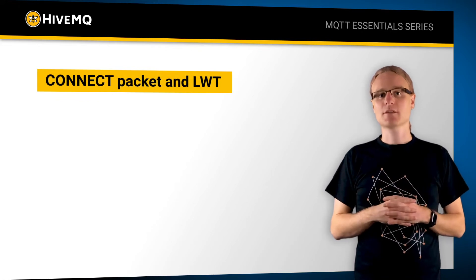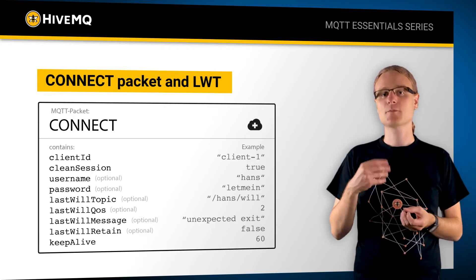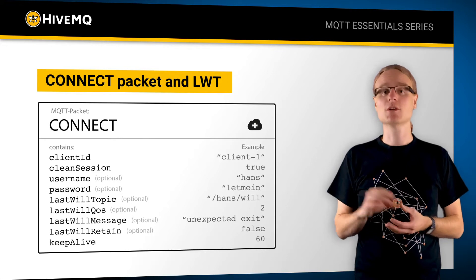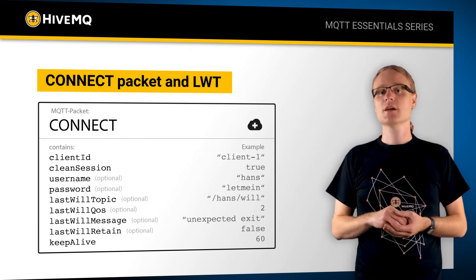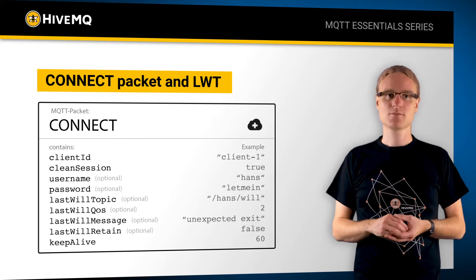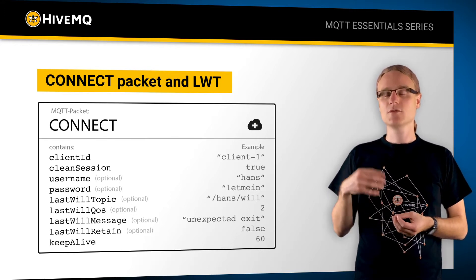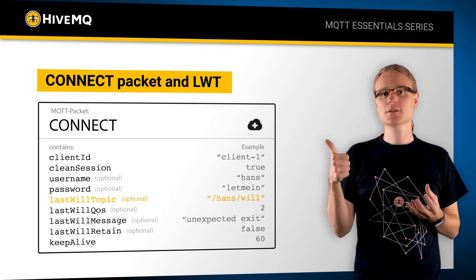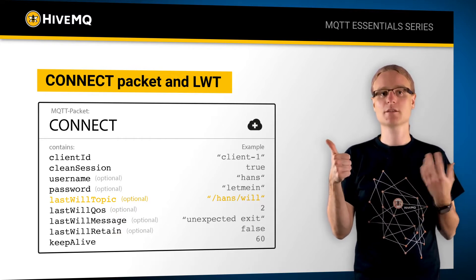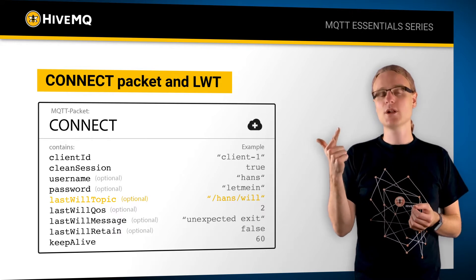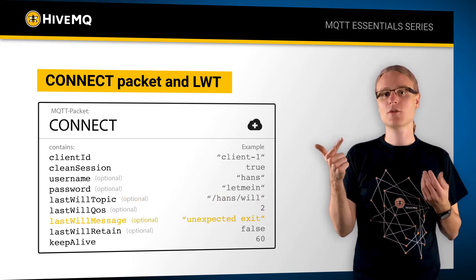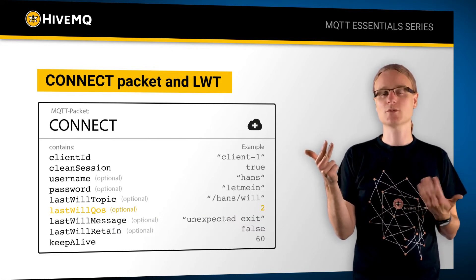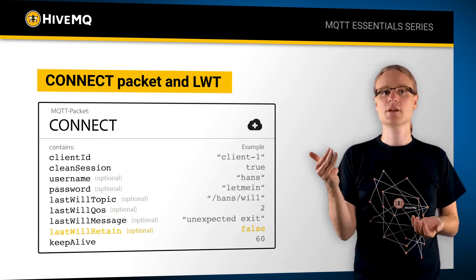Let's look at the connect packet. The connect packet has four different properties you can set for Last Will and Testament. Last Will and Testament is an optional feature — you don't need to use it, but it's a really great feature for error detection. If you want to use it, you need to set in the MQTT connect packet: the Will topic, which is the topic of the MQTT message the broker should send on behalf of the client if it dies; the Will payload, which is the actual content of the message; the quality of service level — zero, one, or two; and you can also set the retain flag.